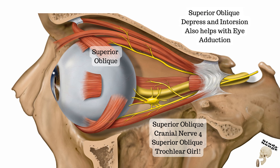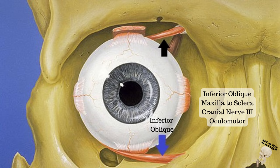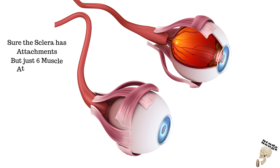Superior oblique: depression and intorsion, also helps with eye adduction. Superior oblique, cranial nerve four — superior oblique, trochlear nerve. Inferior oblique: maxillary bone to sclera. Cranial nerve three, oculomotor.